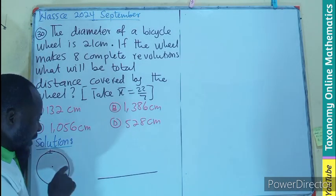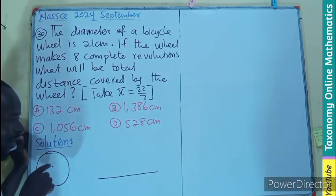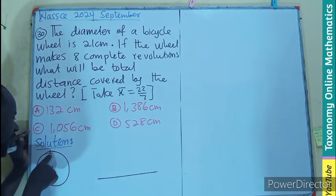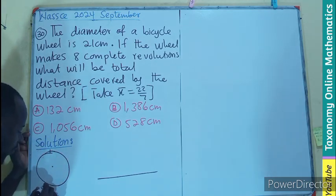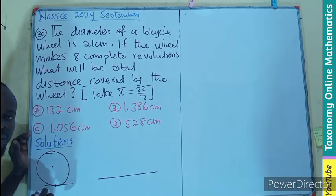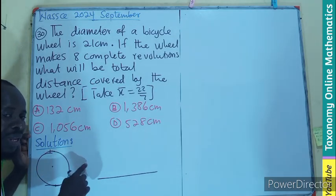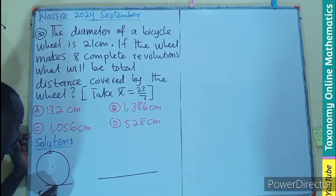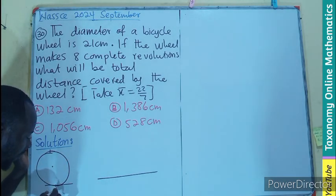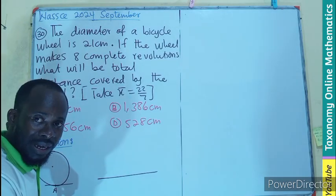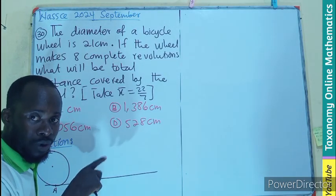Now, one complete revolution means that if the bicycle wheel is on the ground at this point, if you start moving, it will be moving all the way. So when it completes, when this point A comes back to itself, it means we have done a complete revolution.